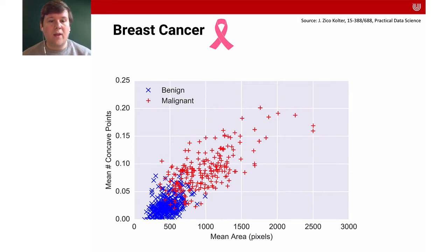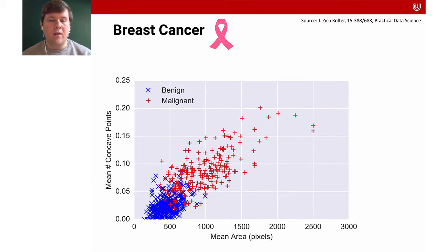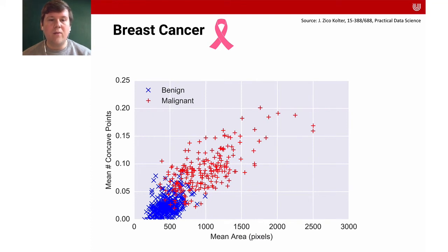What you could do is draw a line through the data, and with that line decide whether the tumor is benign or malignant. Surprisingly, that's exactly what we're doing with machine learning. It gets more complicated than line fitting, but intuitively that's the core idea: we try to fit a line through the data with which we make a decision about the different classes.